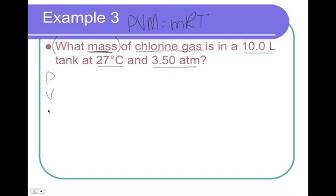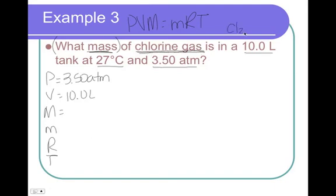So let's write out our variables. Pressure is 3.50 atmospheres. The volume was 10 liters. Molar mass, we are dealing with chlorine, and remember, chlorine's a Brinkelhoff, so it's like that. So the mass of a chlorine molecule is actually going to be 2 times the mass of each chlorine for a mass of 70.90 grams per mole. Little m stands for just mass, and it says what mass, so that's going to be our X. R is still 0.0821. Temperature of 27 degrees Celsius is 300 Kelvin.